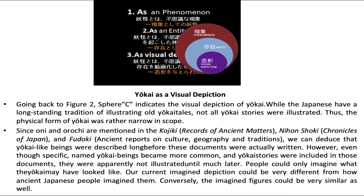Yokai has a visual depiction. Going back to figure 2, sphere C, it indicates the visual depiction of a Yokai. While the Japanese have a long-standing tradition of illustrating old Yokai tales, not all Yokai stories were illustrated. Thus, the physical form of Yokai was rather narrow in scope. Since Oni and Orochi are mentioned in the Kojiki and Nihon Shoki — works of the ancient age translated as Records of Ancient Matters and Chronicles of Japan — as well as Fudoki, ancient reports on culture, geography and tradition, we can deduce that Yokai-like beings were described long before these documents were actually written.